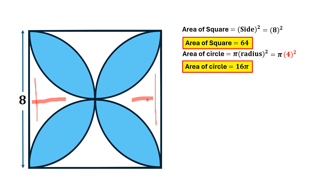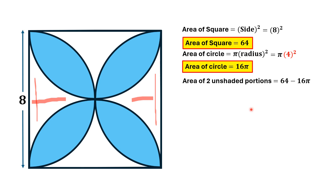If we subtract this area from the area of the square, we find the area of the two unshaded regions: 64 minus 16π. Since the figure is symmetric, all four unshaded areas are equal, so the area of the four unshaded regions is two times (64 minus 16π), which equals 128 minus 32π.